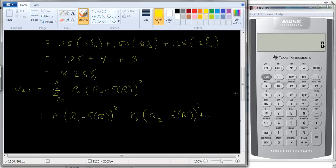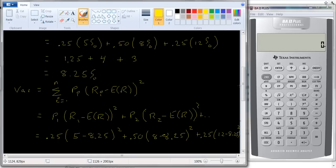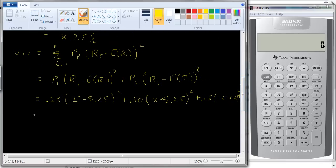So let's finish up the example we have here. In this case we're going to have the first state of the world, there's a 25% chance. In that state we get a 5% return minus 8.25, squared. Plus there's a 50% chance that we're in the second state of the world, 8 minus the expected value 8.25, squared. Plus 0.25 times 12 minus 8.25, squared.